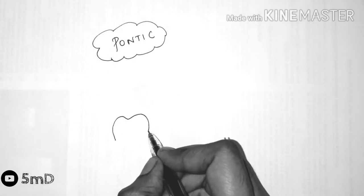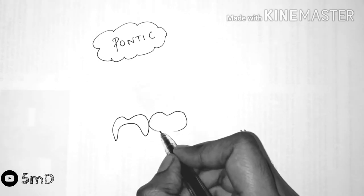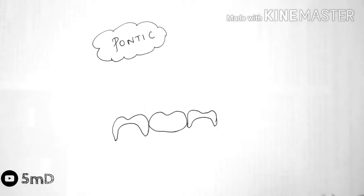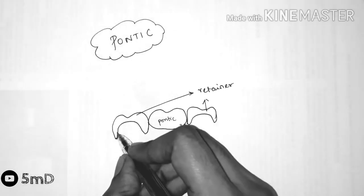Today let us see about pontic, one of the components of fixed partial denture. In a fixed partial denture we have three main components: pontic, connector, and retainer. Pontic is that part of the FPD that replaces the missing natural teeth. It is an artificial tooth in an FPD.